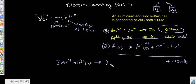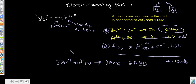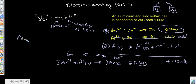So two aluminums and three zincs combine. Three zinc in solid form plus two aluminum aqueous — that's our balanced overall equation. When you take your two half-reactions and combine them, you have to even up the electrons. Now we have six electrons on this side and six electrons on this side. So now we know our number of moles of electrons is six, and we can insert that into our free energy equation.